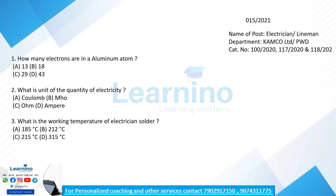Question: what is the working temperature of electrician solder? There are three types of soldering: fine solder, elegant solder. The working temperature is an important topic related to composition. The working temperature of electrician solder is 183 degrees Celsius.